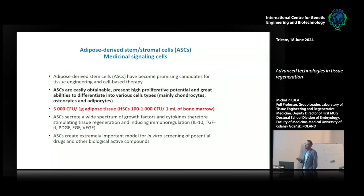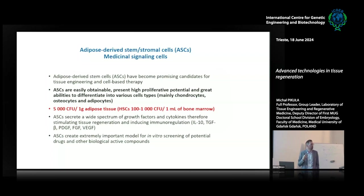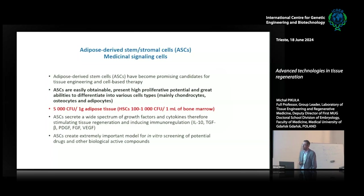What is important is that they secrete a wide spectrum of growth factors — they have really huge paracrine potential. We do believe that if they work after transplantation, they mainly work via different growth factors and paracrine effects. They have some immunosuppressive cytokines they produce, like interleukin-10 and TGF-β. That's why we use them now in clinical trials in autoimmune diseases like lupus and rheumatoid arthritis. The idea is that they stimulate regeneration but also inhibit inflammation. For us this is also really an important model for in vitro screening and potential drugs.